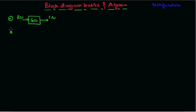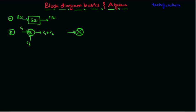The next basic elements for block diagram representations are summing points or differencing points. If x1 is one input signal and x2 is another, we can sum these two signals to get a resultant signal. A differencing component can be represented with a plus-minus symbol, where we want to get the difference between x1 and x2 as the output — that is, x1 minus x2.